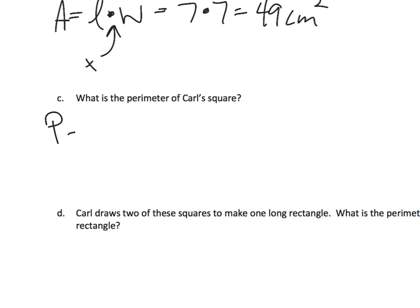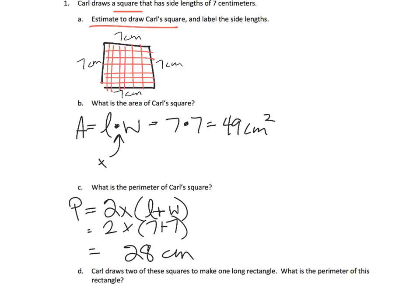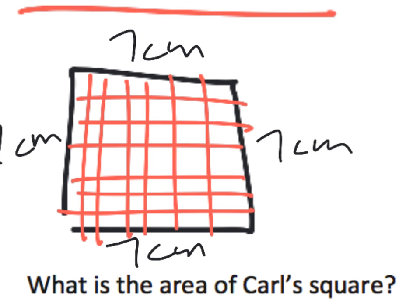And what is the perimeter? Well, the perimeter is two times the length plus the width. So you add seven plus seven, that gives you 14, and then we're going to times that by 2, and that gives us 28 centimeters. So the distance around that rectangle, if we were going to add it, would be seven plus seven plus seven plus seven, which is 28.